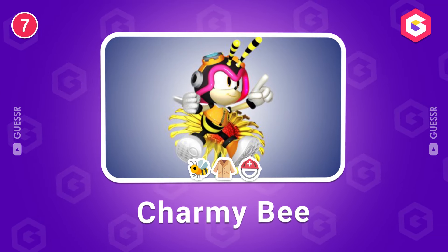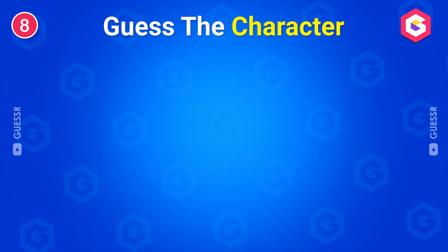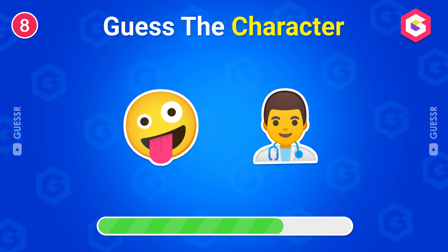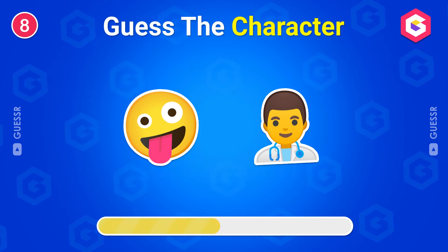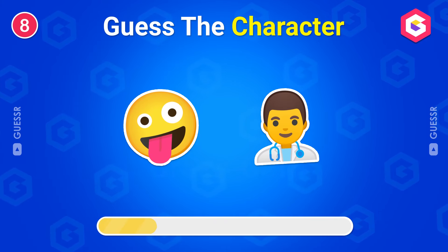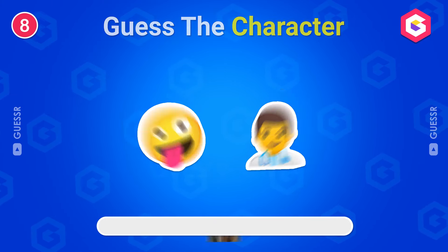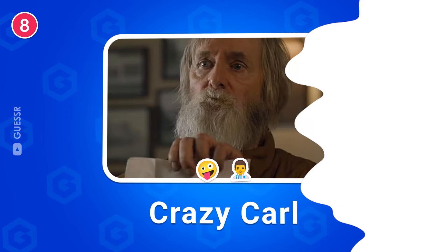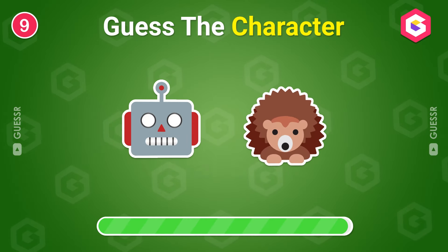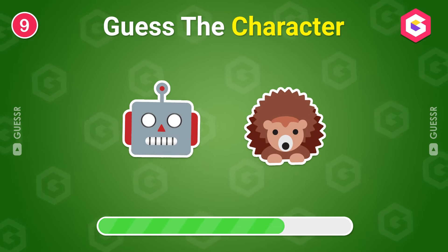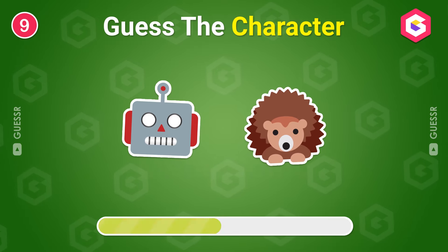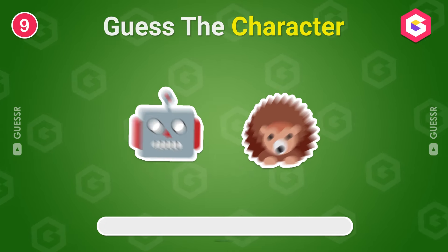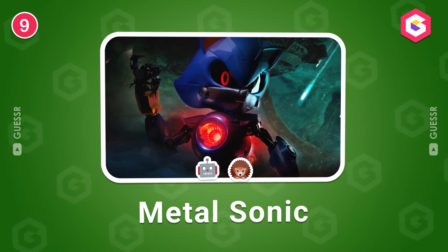Who is this character? Yes! Charmy Bee! Can you name this one? Crazy Carl! Who do you think this is? Metal Sonic, of course!